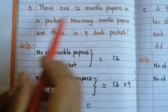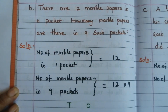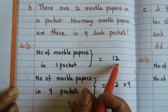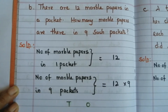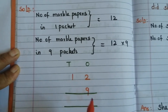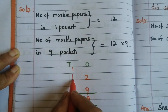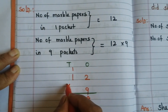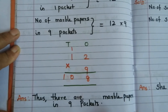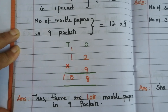B: There are 12 marble papers in a packet. How many marble papers are there in 9 such packets? Solution: Number of marble papers in 1 packet = 12. Number of marble papers in 9 packets = 12 × 9. Write vertically: 9 twos are 18 — write 8, carry over 1. 9 ones are 9, plus 1 = 10. The answer is 108. There are 108 marble papers in 9 packets.